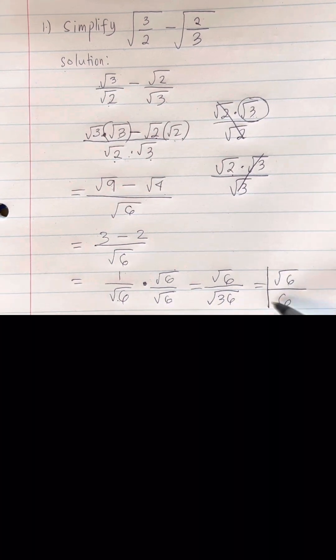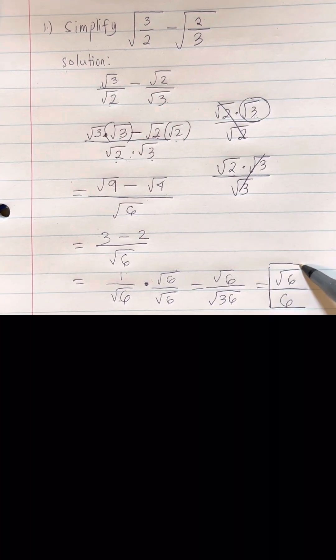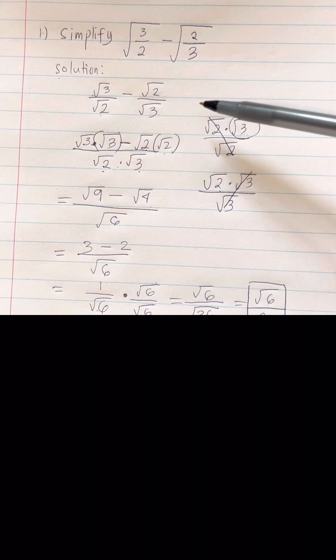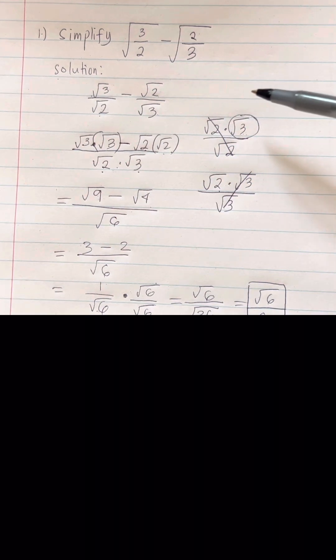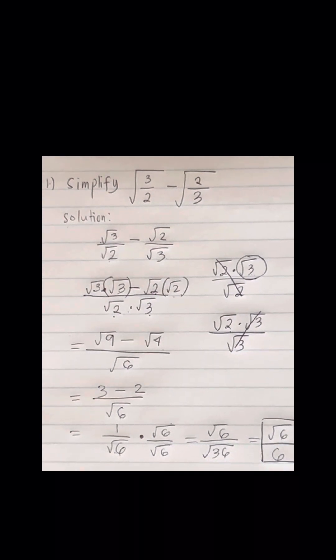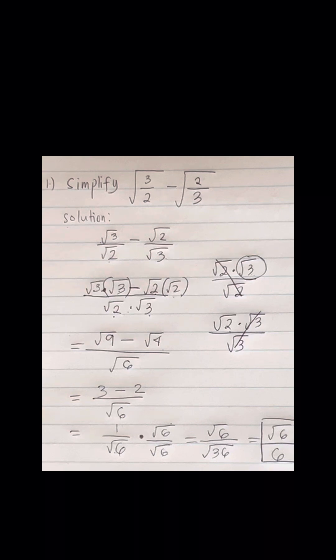So our simplified form of square root of 3 halves minus the square root of 2 thirds is square root of 6 over 6. I hope you learned something. If you are new to my channel, do not forget to subscribe, like, and click the notification bell. If you have questions or suggestions, just comment down below. Thank you for watching.